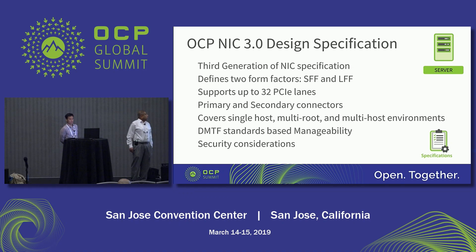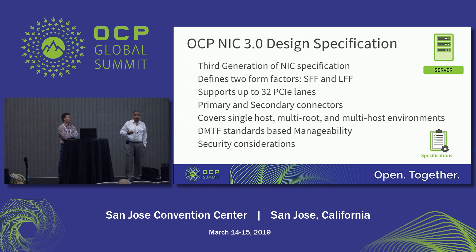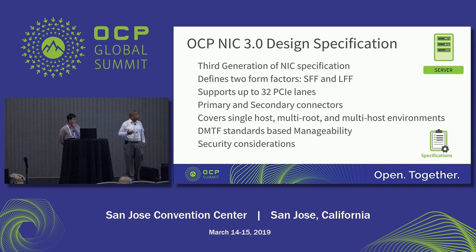As most people in the room know, OCP NIC 3.0 is the next evolution in OCP NIC design. It covers more than just the standard NIC, including smart NIC, FPGA, and other accelerators. It's designed to support up to 32 PCI lanes with standard PCI connectors — primary and secondary. From day one we wanted to cover all single-host, multi-host, and multi-root NIC implementations, enabling the shared NIC model.